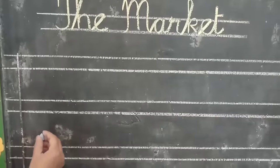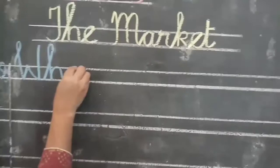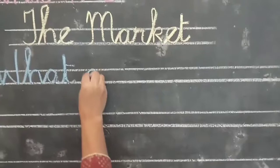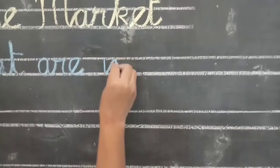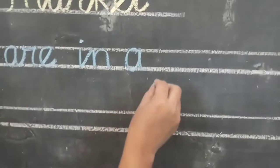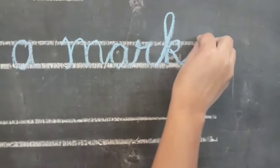Leave one line and write question number 1. Question number 1 is: What are in a market? W, H, A, T — What. Take one finger space and write: are — R, A, R, E. Take one finger space and write: in. Take one finger space and write: a. Take one finger space and write: market — M, A, R, K, E, T. What are in a market?